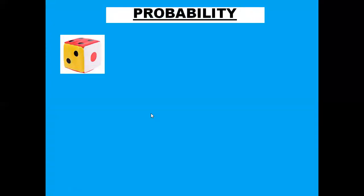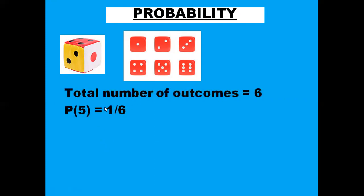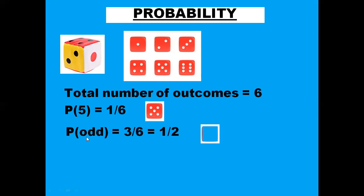Now coming to the dice. When a dice is rolled, we know there are six possible outcomes: one, two, three, four, five, six. So the total number of outcomes is six. Probability of getting five — we can get five only once when it is rolled, so we write one in the numerator divided by six. Now the probability of getting an odd number: the odd numbers are one, three, and five — three numbers. So it is 3/6, which equals one-half, because there are three odd numbers on the dice.